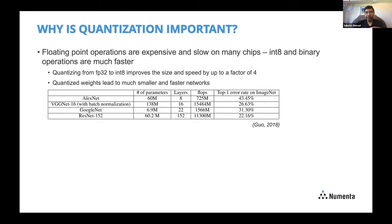This table is from a nice review paper by Guo. It shows the number of parameters in modern neural networks, and these are increasing really rapidly. ResNet 152 has 60.2 million weights, and the number of floating point operations for a single inference pass would be about 11 billion. If you look at ImageNet on the right, as you've added more and more parameters, the error rate has decreased over time. ResNet 50, which is one we're focused on, has about 25 million parameters.